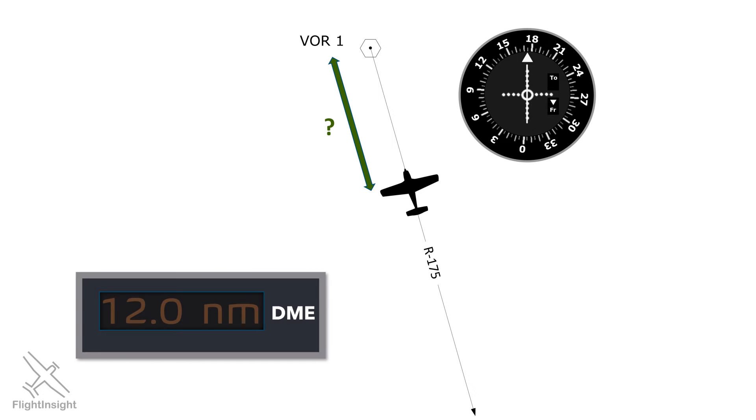A common question on the FAA knowledge test, and something all IFR pilots should generally understand, involves the concept of DME slant range error.